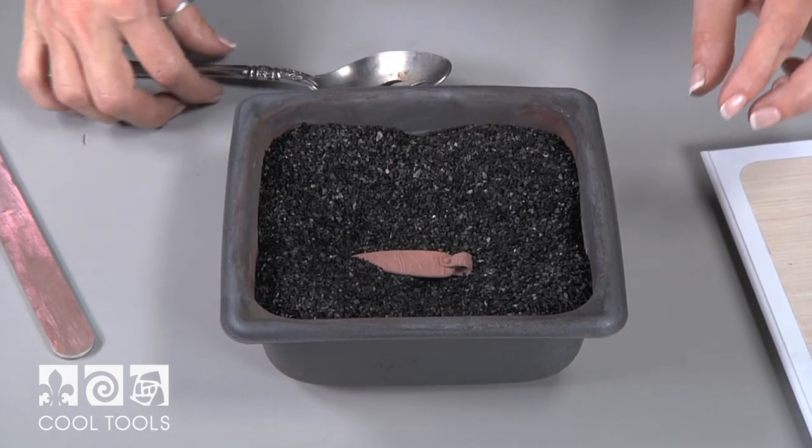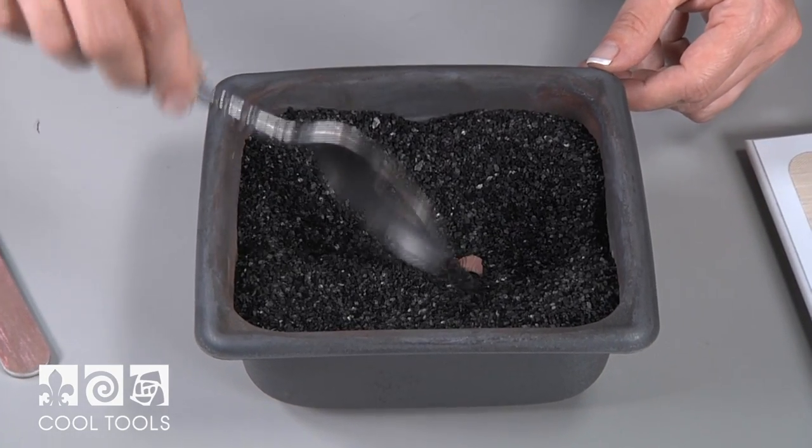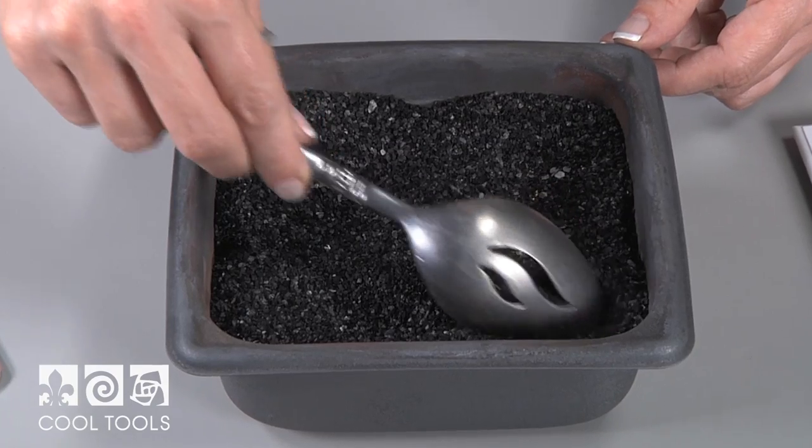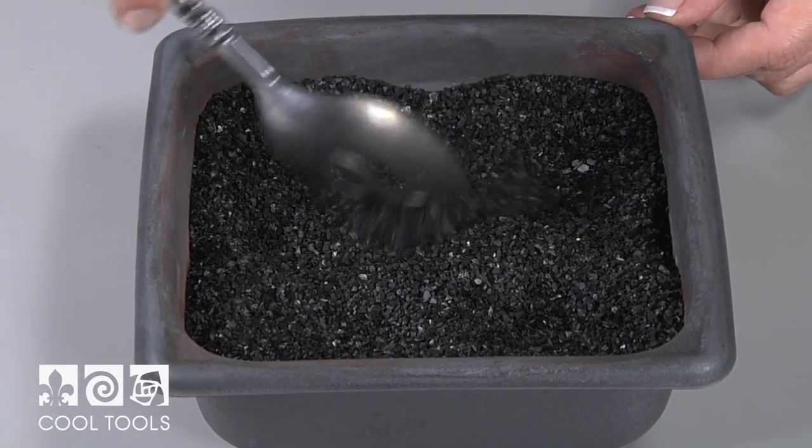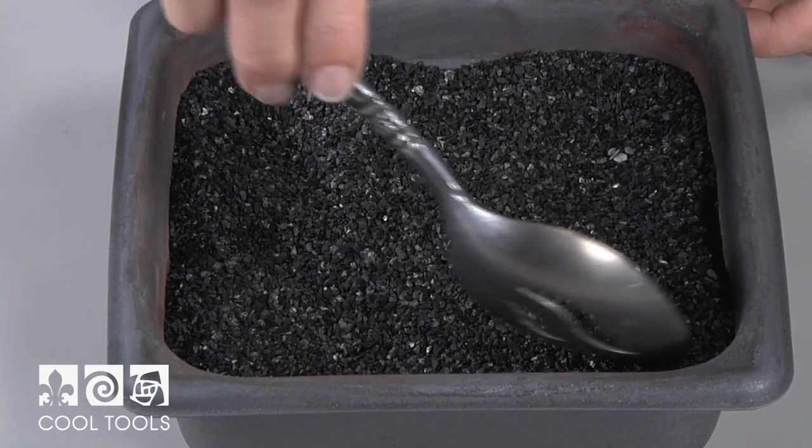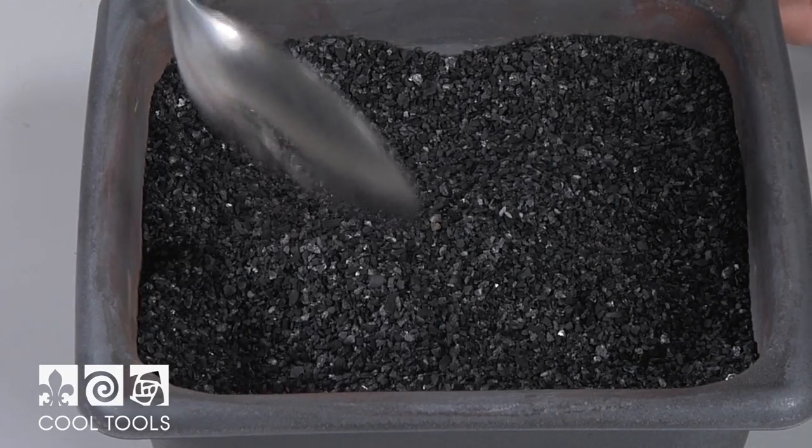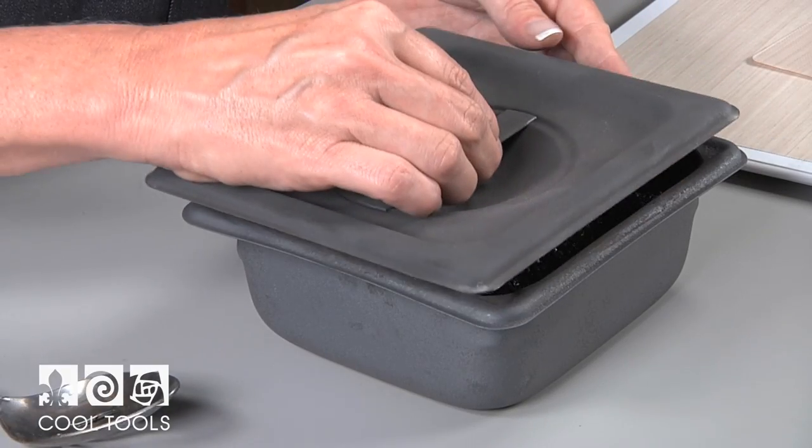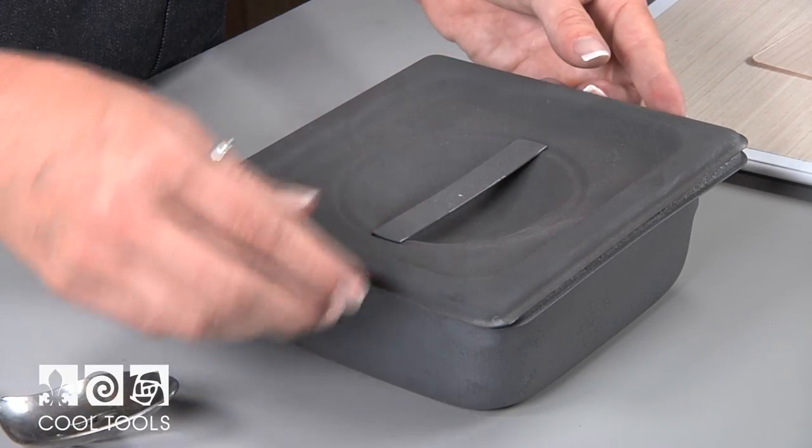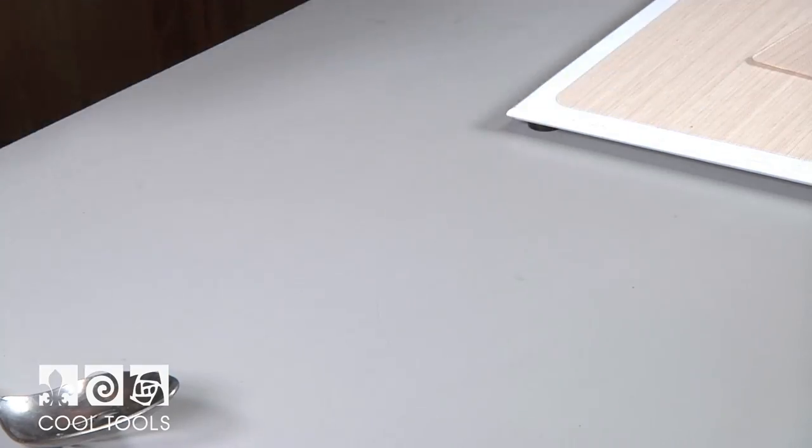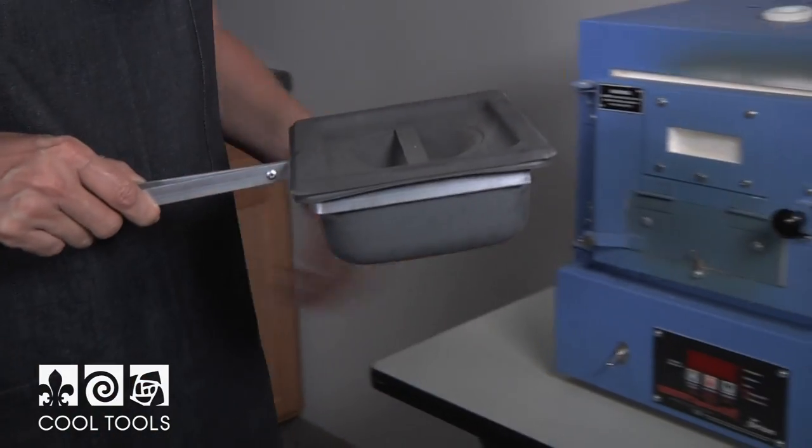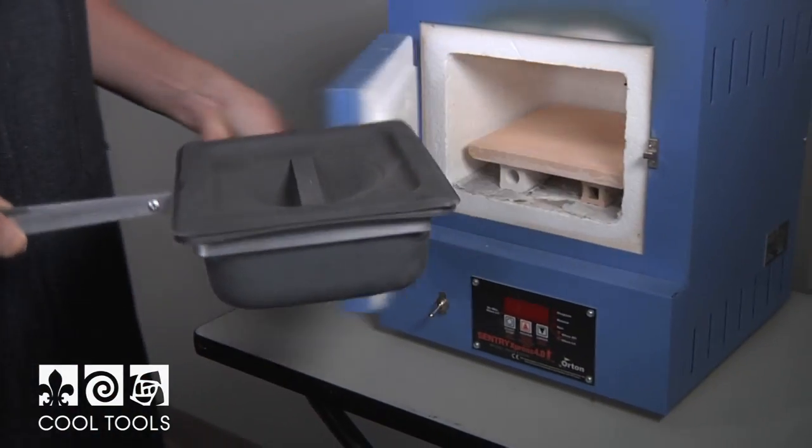When placing the piece in the firing container, make sure that there is at least one half inch of carbon between the bottom of the container and the unfired piece, then cover with an inch of carbon on the top. Place the lid on the container and place it in the kiln on a kiln shelf above the kiln floor. This allows heat to circulate around the box.